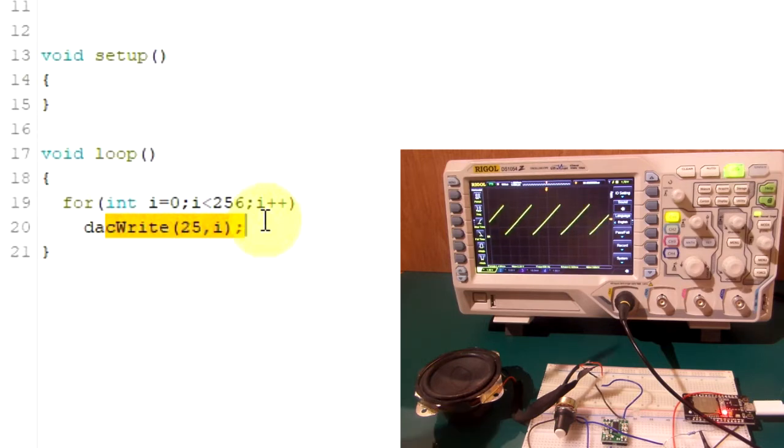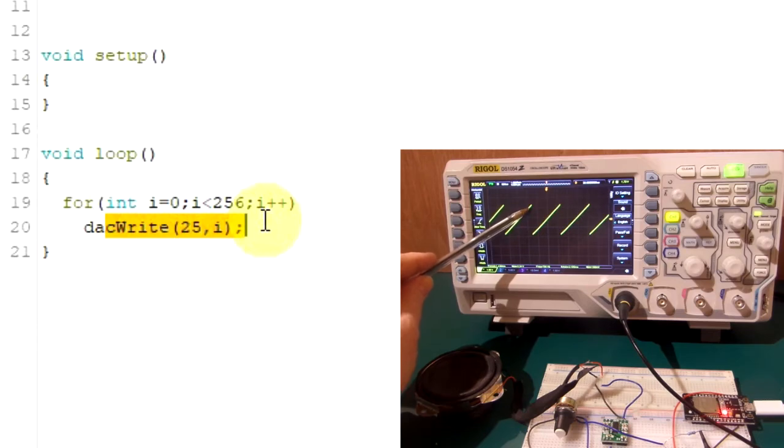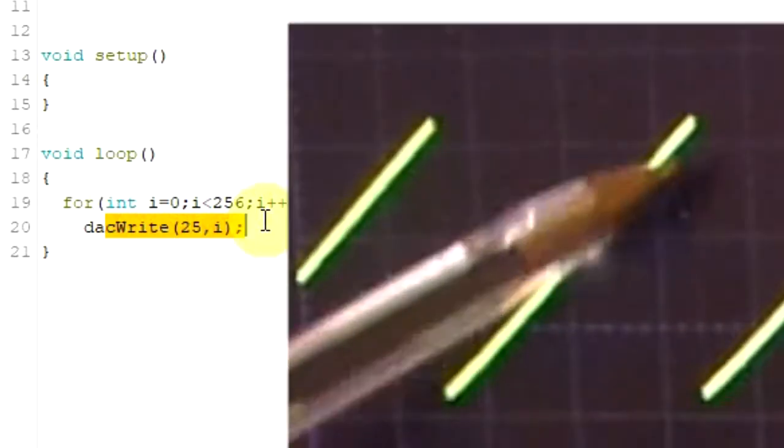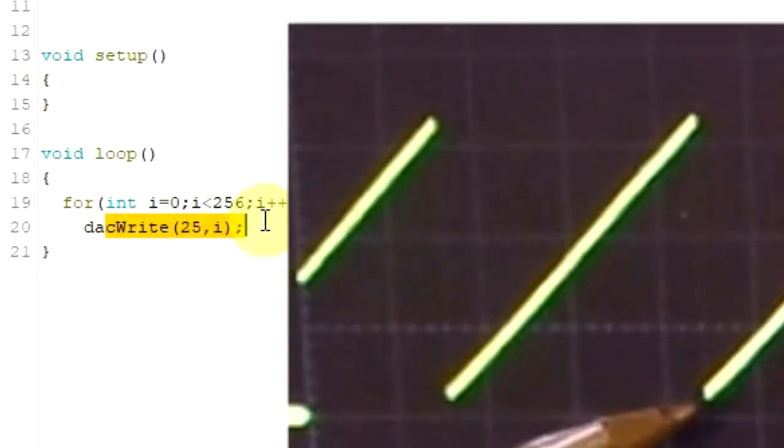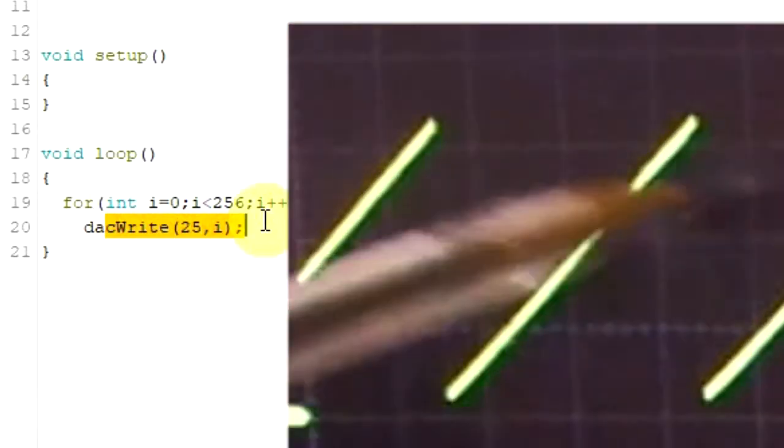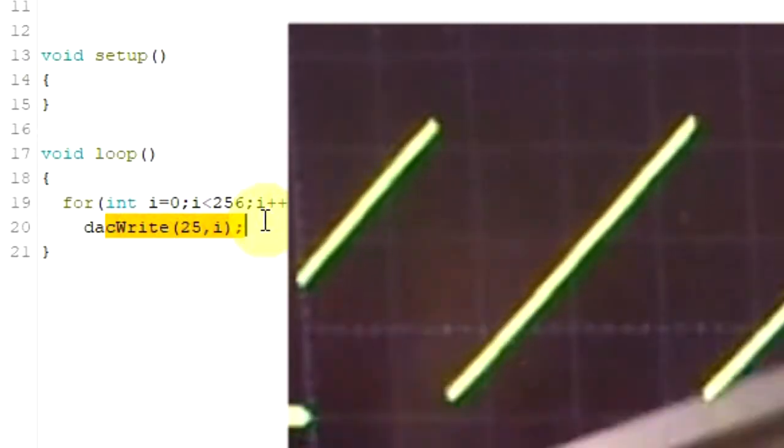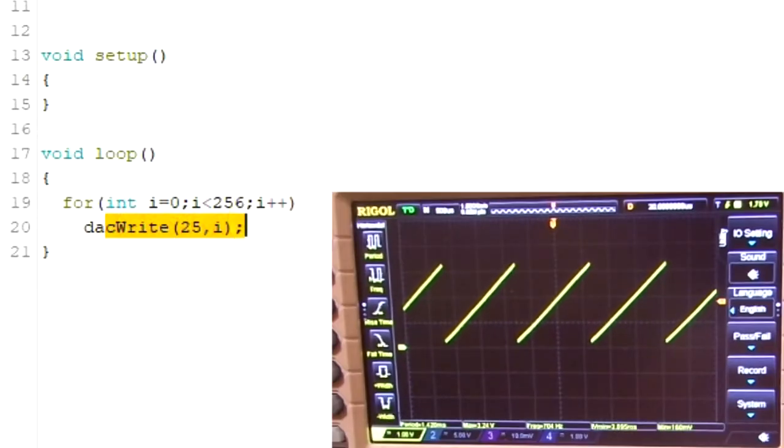The speed at which we send these values to the DAC determines the frequency or the pitch of the sound that we'll hear. So what we've got here, we've got the value going from 0 to 255 up and then very quickly because we'll just repeat the loop it starts at 0 again. There's an extremely faint line there as it quickly goes back down and starts again. So you've got a sawtooth shape.